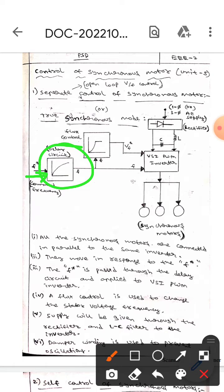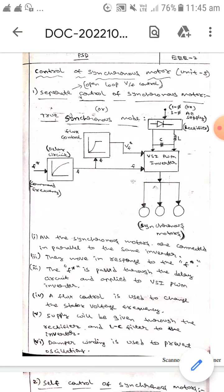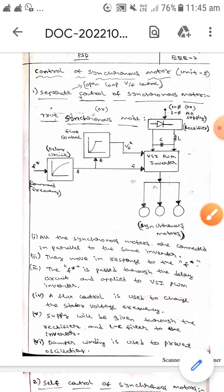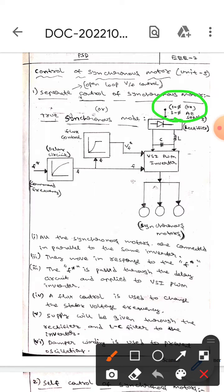Then it is applied to the VSA PWM inverter. Here is the flux control, which is used to change the stator voltage frequency. The supply will be given through the rectifier and through the LC filter.